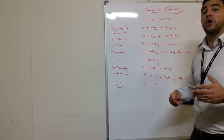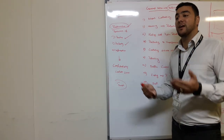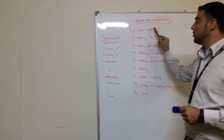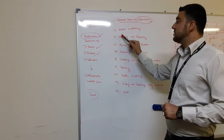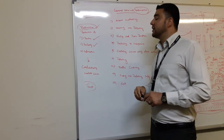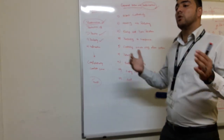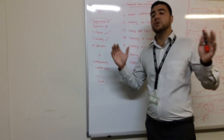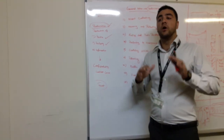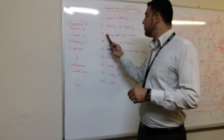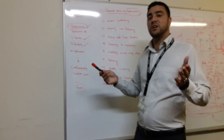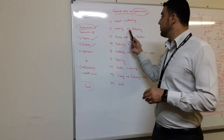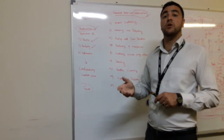As a security guard, your general duties and responsibilities can be highlighted with nine things. The first is access control. The second is observing and reporting — at your duty post, you need to observe everything around you, and if you observe something wrong, suspicious, or strange, you need to immediately report it to the CCTV control room.